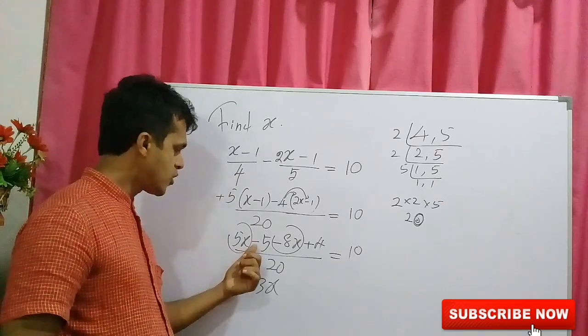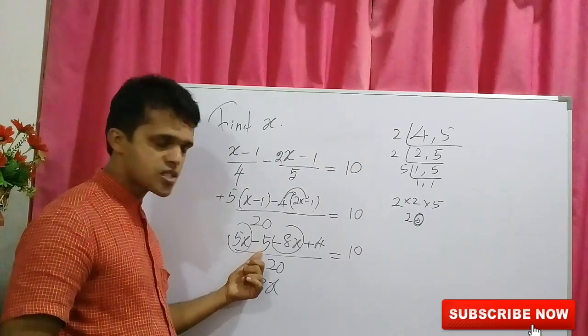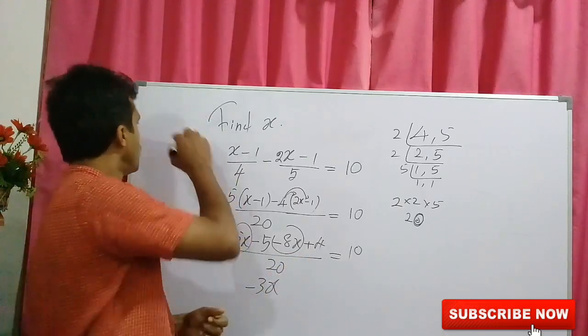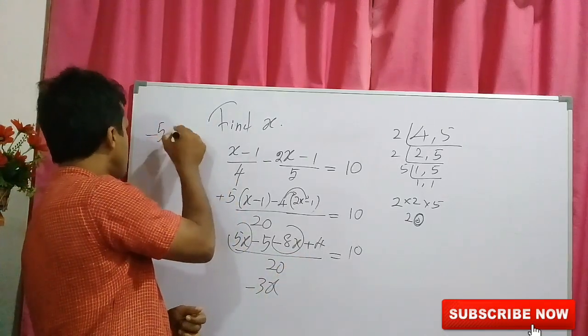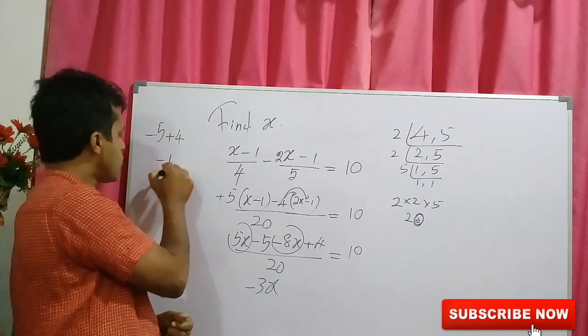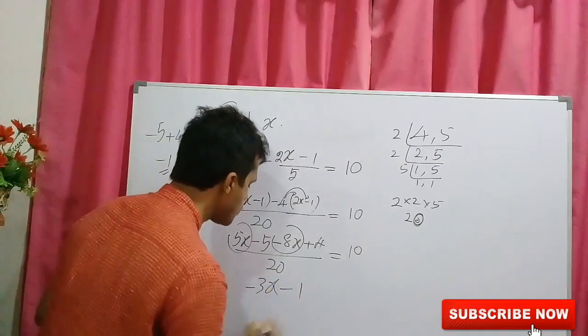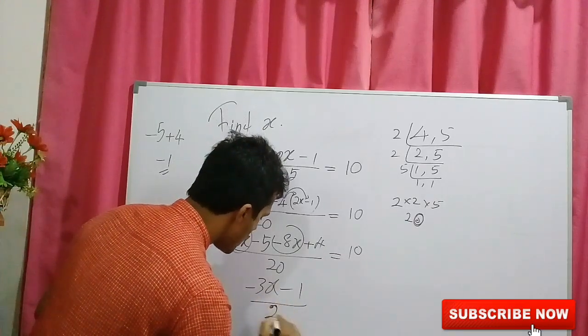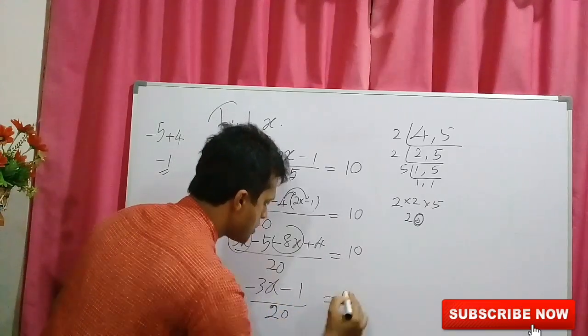Not only that, you can simplify the digits negative 5 plus 4. What is the value of negative 5 plus 4? Which is negative 5 plus 4, negative 1. So, negative 3x, negative 1 over 20 equals to 10.